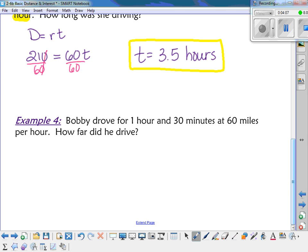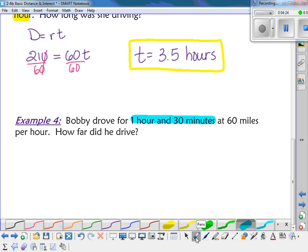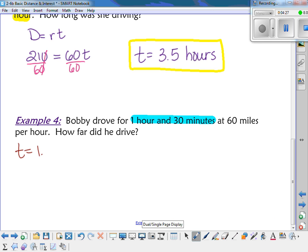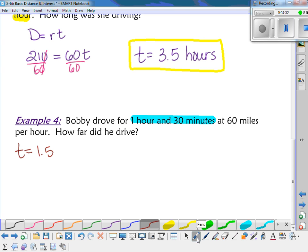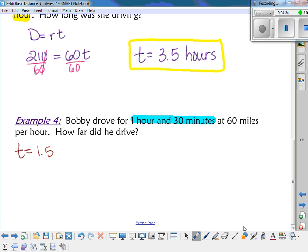Let's take a look at number 4. Bobby drove for an hour and 30 minutes. One hour and 30 minutes. I need to just make it into straight hours. So how could I represent 30 minutes as a decimal? 1.5. Right. So for that one, our time is going to equal 1.5. And then they gave us 60 miles per hour. Is that the distance or the rate? 60 miles per hour is the rate. So R equals 60. So figure out how far you went.